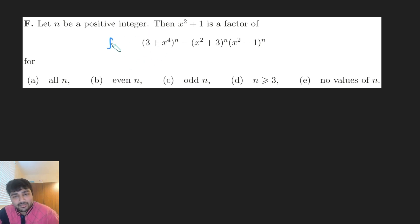The way I'm going to do this is by using the factor theorem. So if x² + 1 is a factor, then this function f(x)... In fact, I can write another function g(x). If I call this f(x), I can make g(x) equal to (3 + x²)ⁿ - (x + 3)ⁿ(x - 1)ⁿ. Clearly, if x² + 1 is a factor of this...